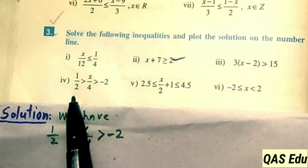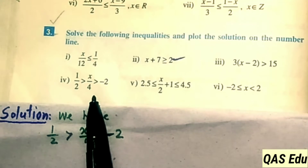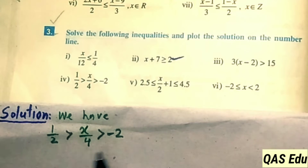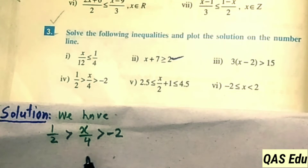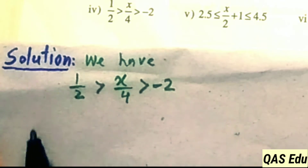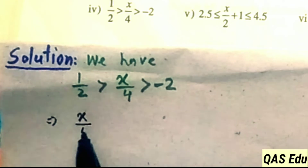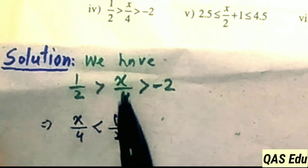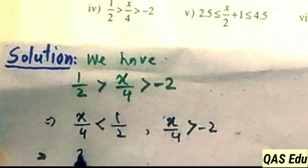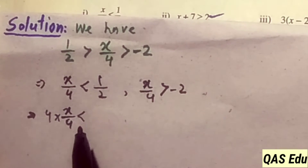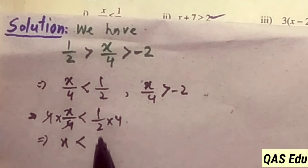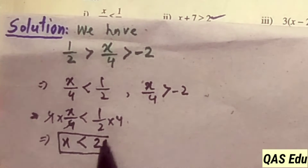Part number 4: 1 over 2 is greater than x over 4 is greater than minus 2. We split this into two parts: x over 4 is less than 1 over 2, and x over 4 is greater than minus 2. For the first part, multiply both sides by 4: 4 cancels, 1 over 2 times 4 equals 2. So x is less than 2.